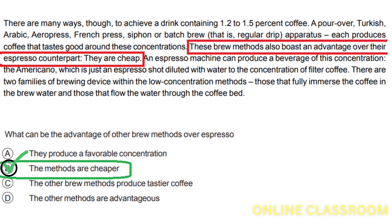The paragraph states that these brew methods have an advantage over espresso — they are cheap. Option A, they produce a favorable concentration, is incorrect. The paragraph does not mention that the other brew methods produce a favorable concentration; it only states they can achieve a drink containing 1.2 to 1.5% coffee. Option B, the methods are cheaper, is correct. The paragraph explicitly mentions that these brew methods have an advantage over espresso because they are cheap.